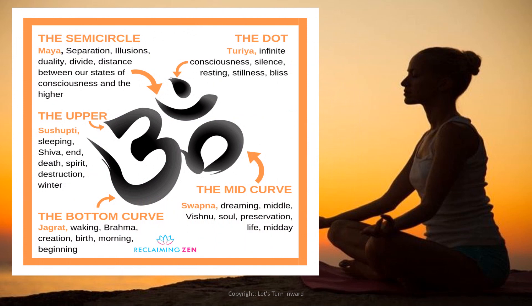Om is considered the highest mantra in Eastern philosophy, and it also denotes the four states of consciousness. The bottom curve of the Om symbol indicates the Jagriti state. The right-side curve — a famous symbol also in Zen Buddhism — represents the Swapna, or dreaming, state. The upper part denotes Susupti. At the very top is a dot called the Bindu, which is the symbol of Turiya or bliss. Above it all is a semi-circle representing Maya — illusion, or the dualistic nature of the mind.